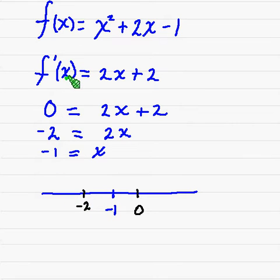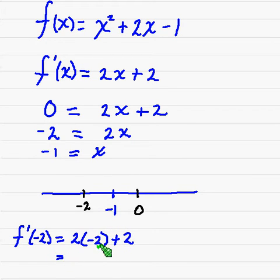I'm going to take negative 2 and plug it into the derivative. So f prime of negative 2 is equal to 2 times negative 2 plus 2, and of course that's going to be equal to negative 2. Now all we're concerned about is the sign, if it's positive or negative, and in this particular case it's negative. So that means that the graph must be decreasing at negative 2. I'm going to indicate that with this negative sign, and also saying if you chose any to the left of negative 1 and plugged it into the derivative, we would get a negative.